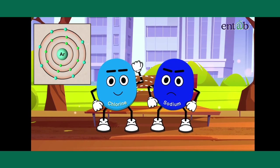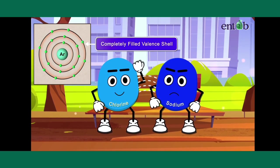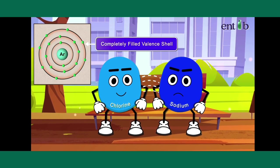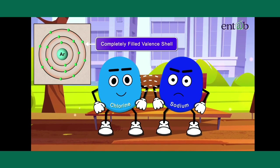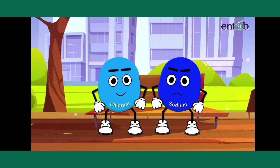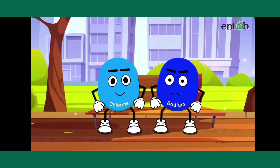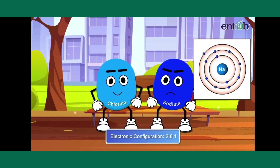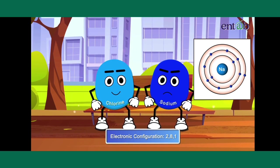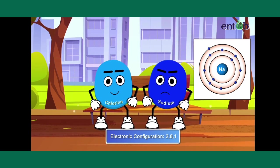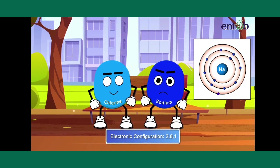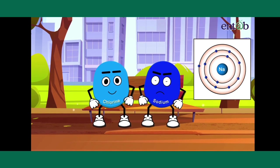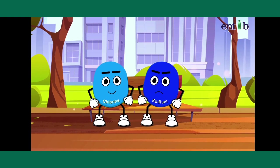Chlorine shared the formula for stability with sodium, which was given to it by Argon. Sodium then told him that it had only eleven electrons. And no matter what it tried, it always ended up with one electron in the outermost shell.